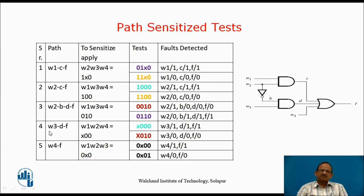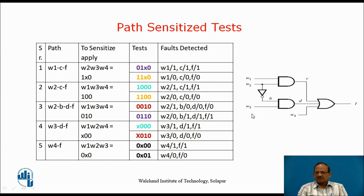For the next path W3, D, F, we must have C and W4 equal to 0, and B must be 1. Making W2=0 makes B equal to 1, and C will also become 0. Therefore W1 may be don't care. To activate path W3, D, F, we have W1=don't care, W2=0, W4=0. The two test vectors X,0,0,0 and X,0,1,0 will determine all the faults on wires W3, D, F.